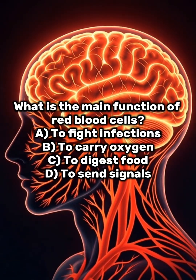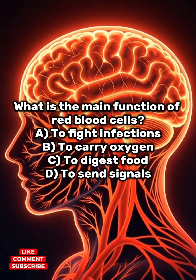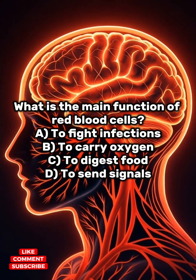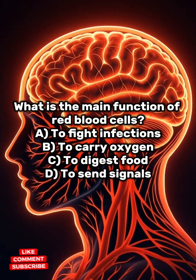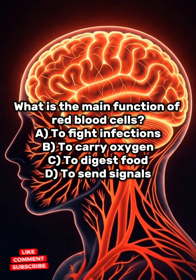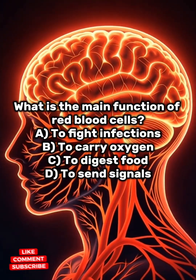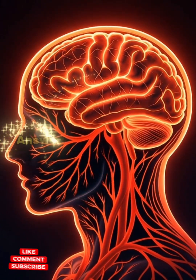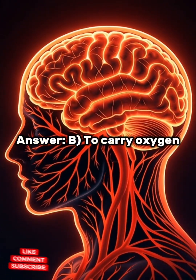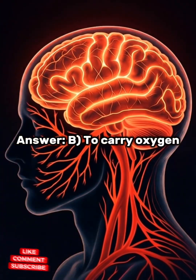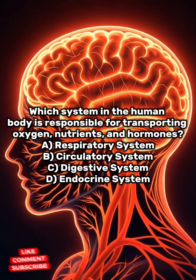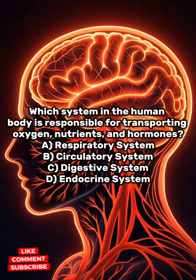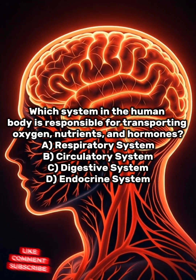What is the main function of red blood cells? A: to fight infections, B: to carry oxygen, C: to digest food, D: to send signals. Answer: B, to carry oxygen. Which system in the human body is responsible for transporting oxygen, nutrients, and hormones?